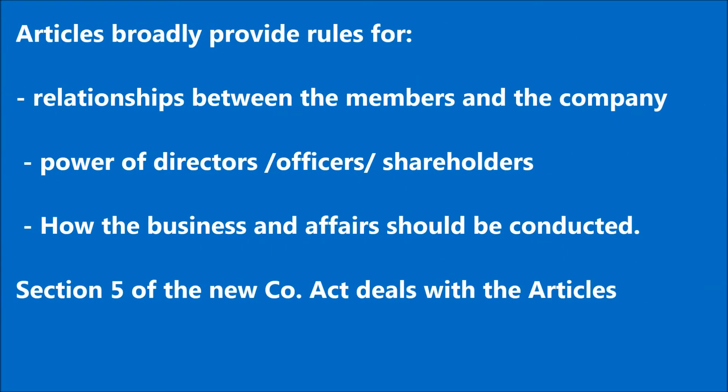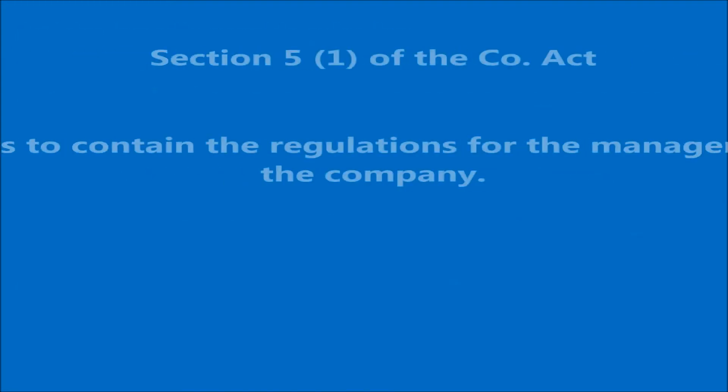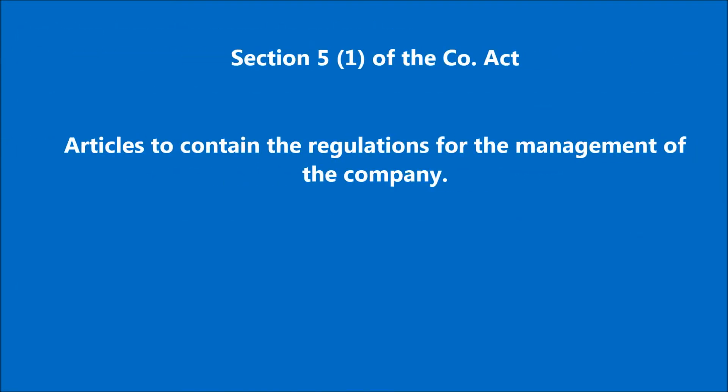Articles provide the rules to govern the relationships between the members and the company, the powers of directors, officers and the shareholders as to voting, and how the business and affairs of the company should be conducted. Section 5 of the Companies Act deals with the Articles of Association. Subsection 1 of Section 5 provides that the articles of the company shall contain the regulations for the management of the company.